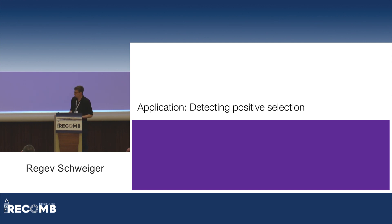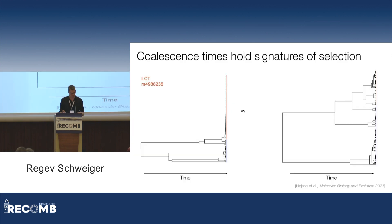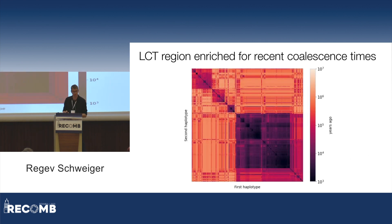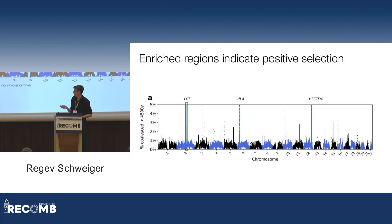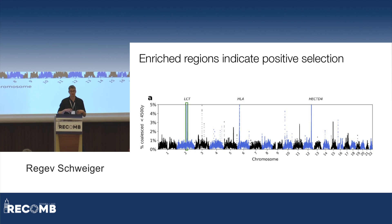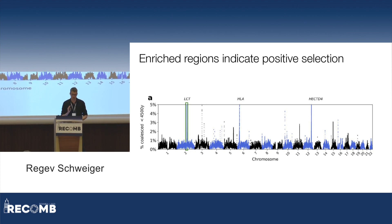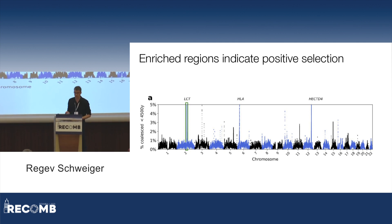I'll quickly go through two applications. First is detecting selection — this has been done before but is a nice sanity check. If there's been recent selection, alleles propagate quickly, meaning going backwards in time coalescences will be very recent compared to neutral expectation. Looking at the LCT region, which is known to be strongly selected, it's extremely enriched for recent coalescence times. We can do a selection scan by asking how much of the posterior density across all pairs is below some threshold, and LCT pops up as expected, along with other regions.